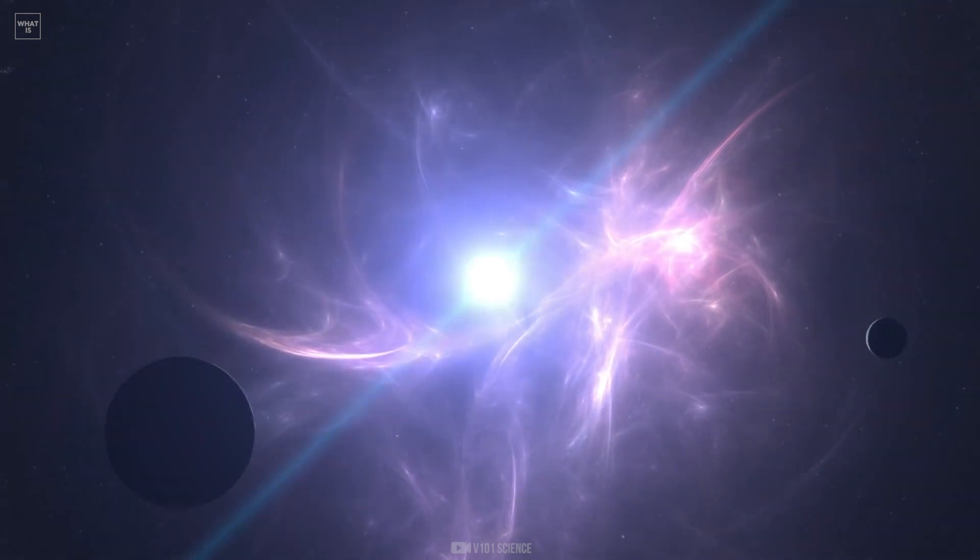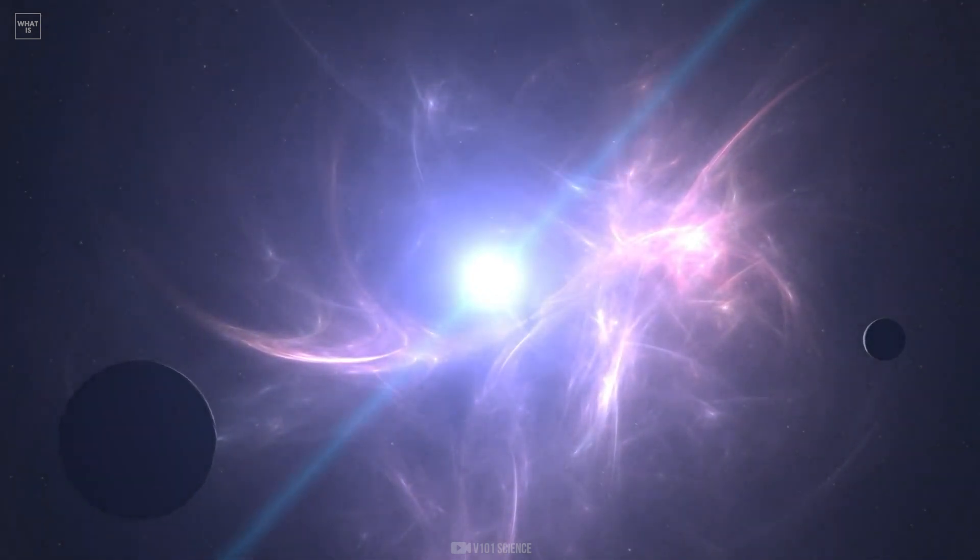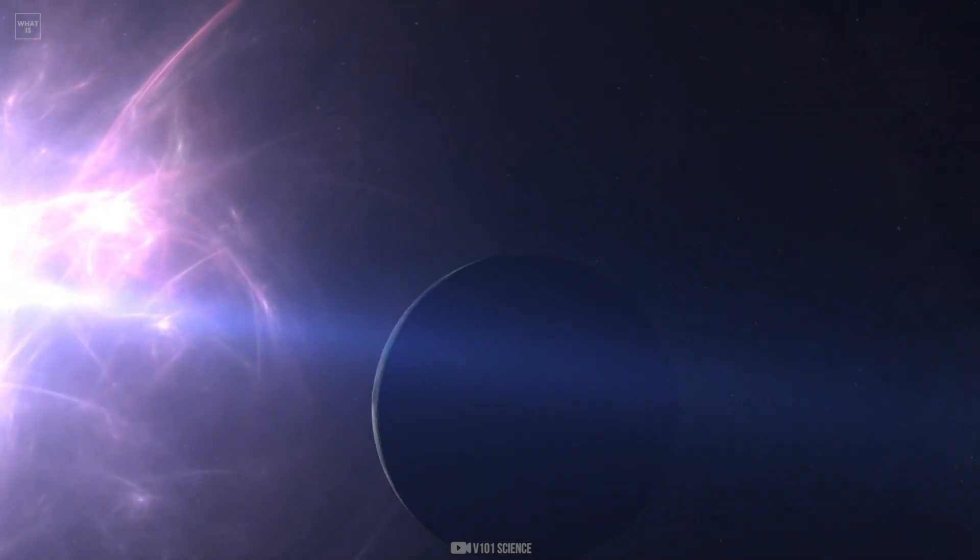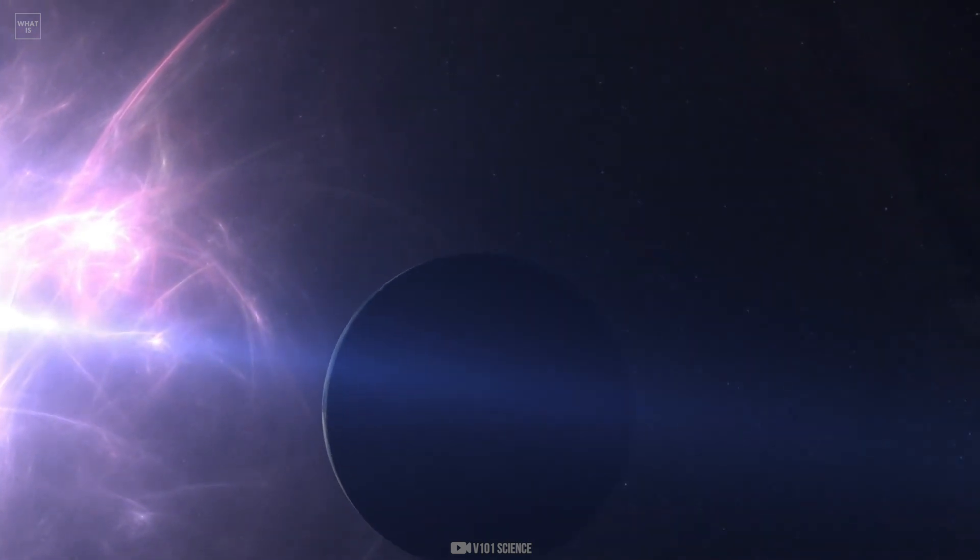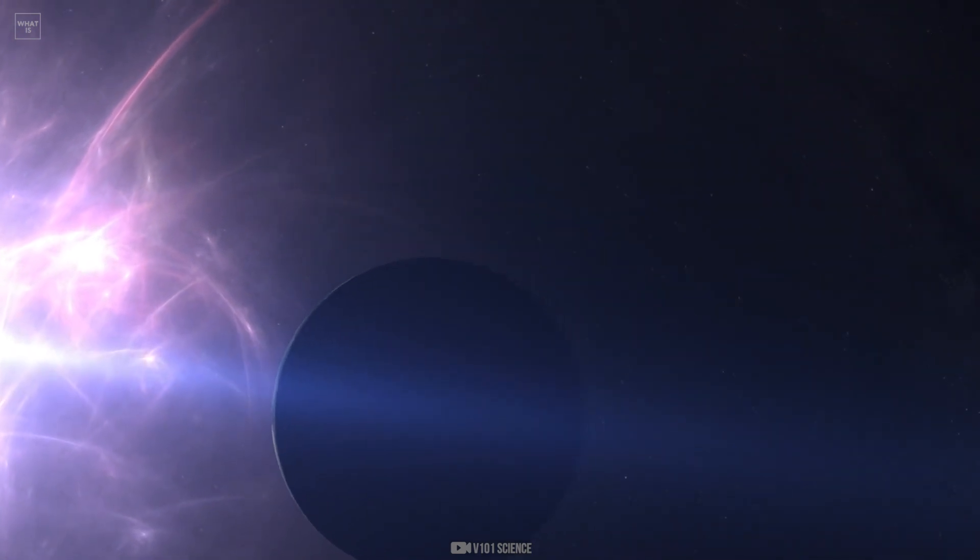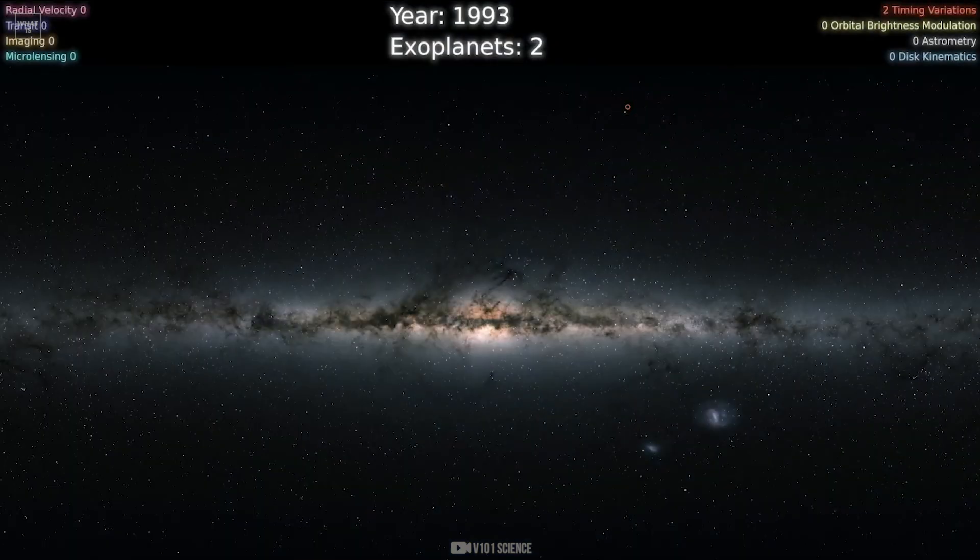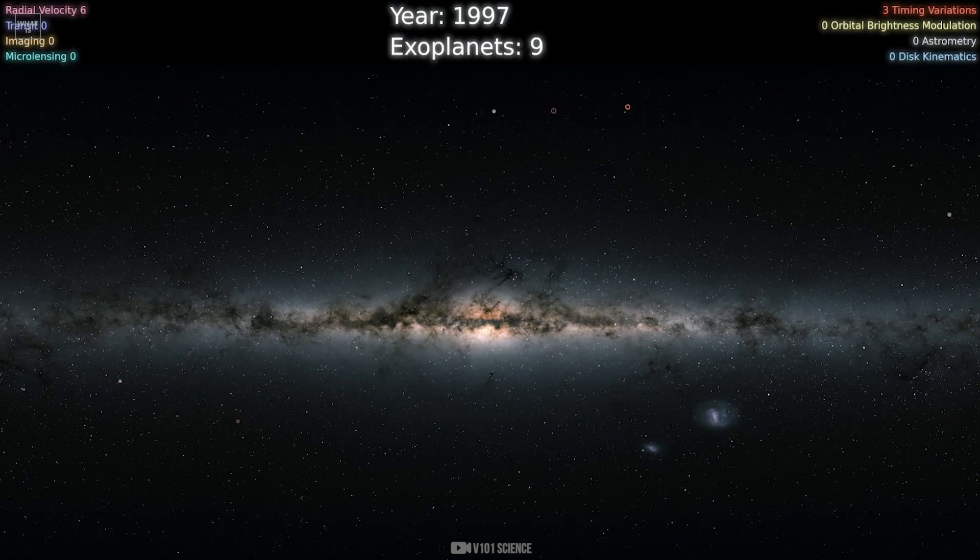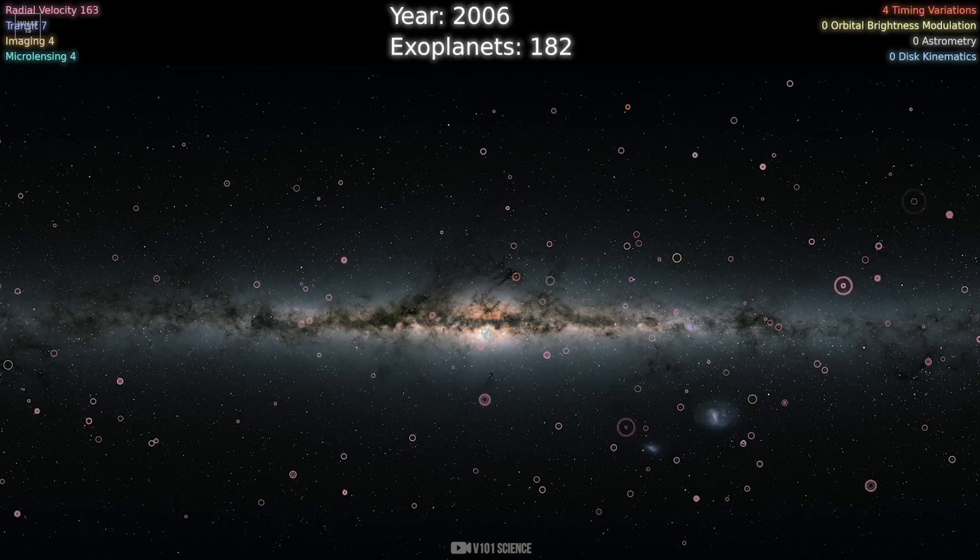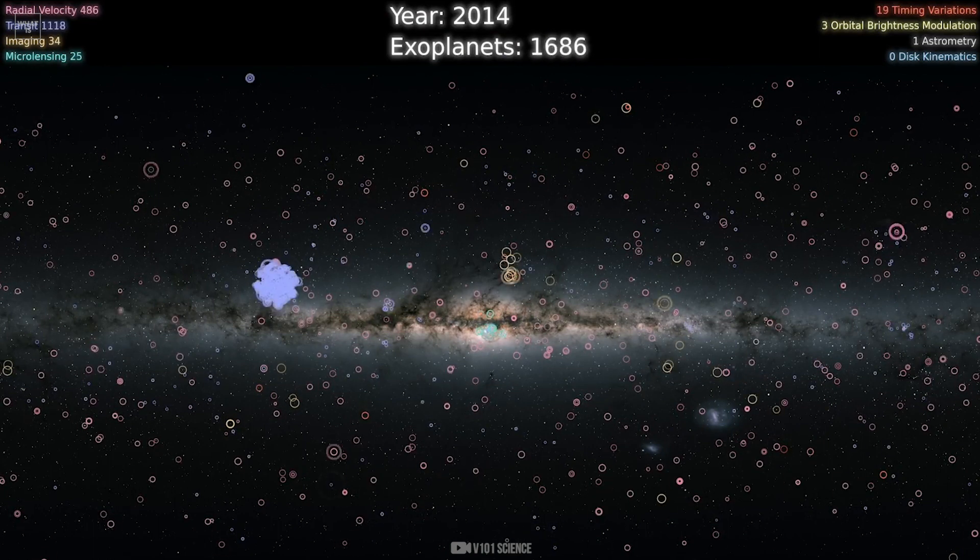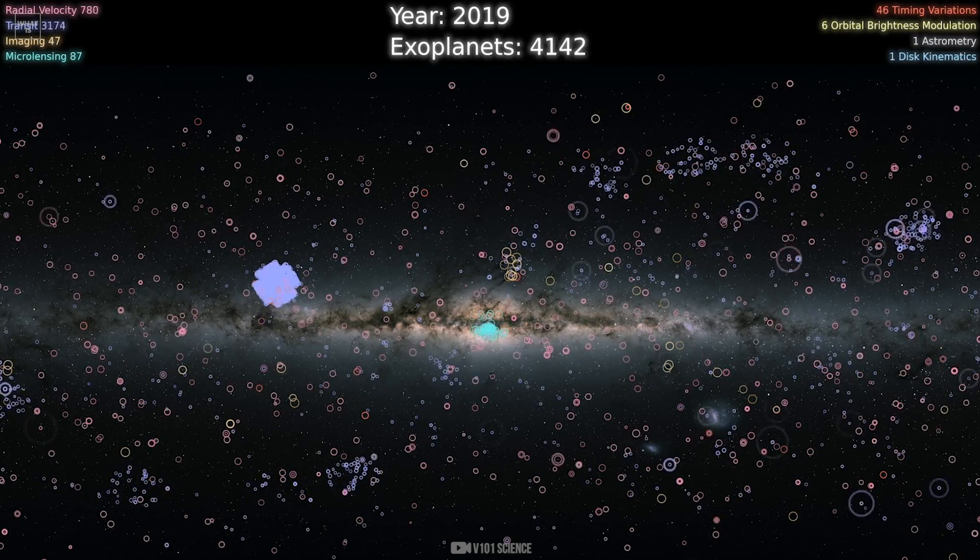Microlensing works if while observing a star, a massive object passes between it and us. The presence of mass warps space, and with it, the path of light coming from the star and planet also bends. This mass works like a lens and does not block the light, but amplifies it. It distorts it, allows you to find not only exoplanets orbiting stars, but also free planets of orphan planets.